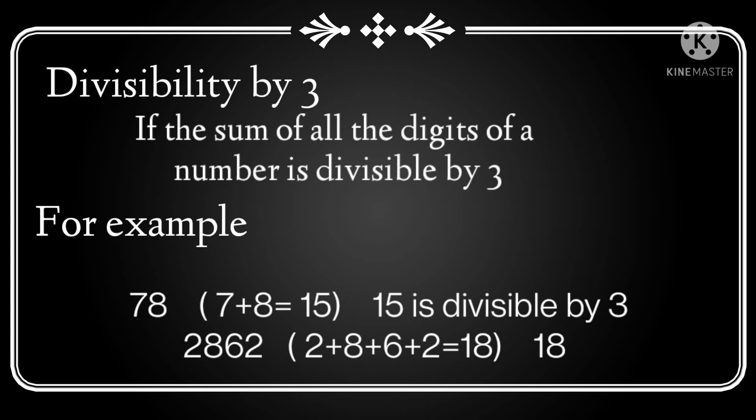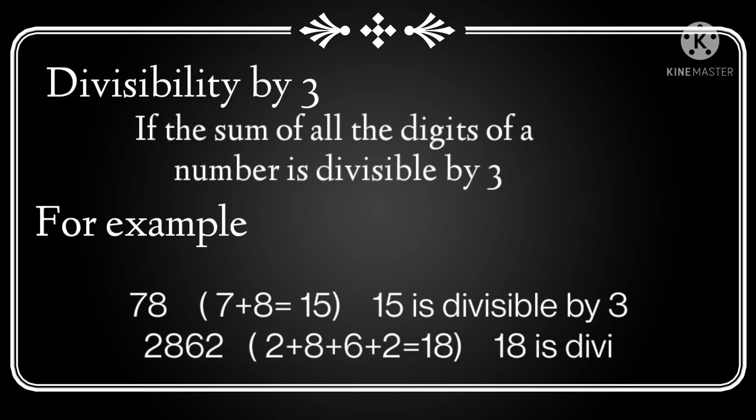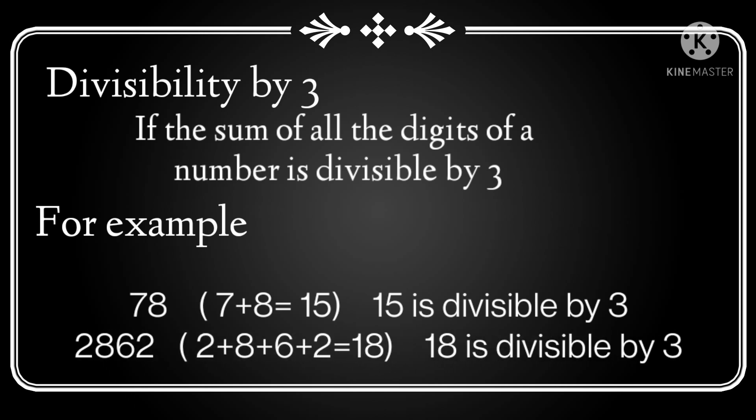One more example — a larger number: 2,862. We add its digits and the sum is equal to 18. Since 18 is divisible by 3, the number 2,862 is also divisible by 3. So it is very easy to check whether a number is divisible by 3 or not by adding its digits.